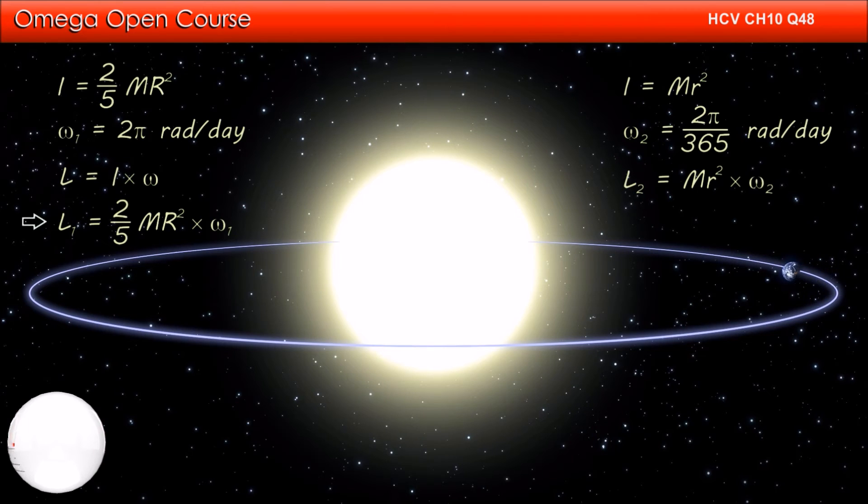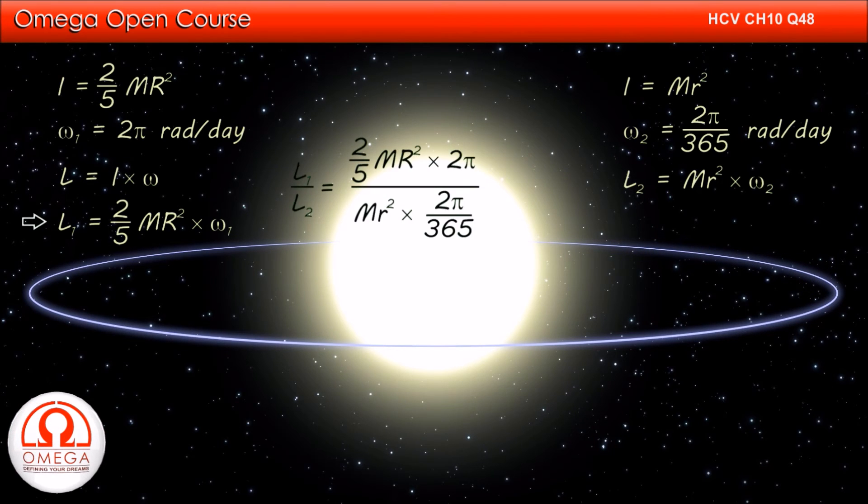Thus, the ratio of the two angular momenta is (2/5)mR²(2π) divided by [mR'²(2π/365)]. Simplifying, we get 146R²/R'².